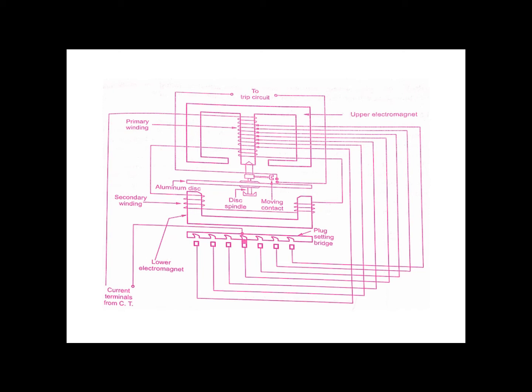When the current exceeds its preset value, the disc rotates and the moving contacts on the spindle make connection with the trip circuit terminals, sending a signal to the trip circuit that an abnormal condition has occurred in the system.